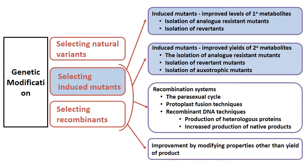To improve the productivity of an industrially important microorganism we can induce mutations in the culture of the industrial microorganism, and after inducing the mutation we will select certain mutants based upon their productivity. We can select induced mutants for improved levels of primary metabolites or for improved levels of secondary metabolites.